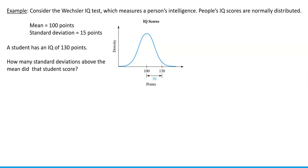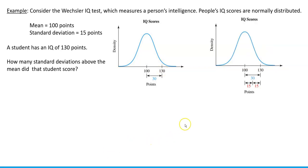We can look at the picture. That student scored 30 points above the mean — 100 is the mean, 130 is what the student scored. How many standard deviations is that? Well, if the standard deviation is 15 points, then it's exactly two standard deviations — we can fit two standard deviations in there.